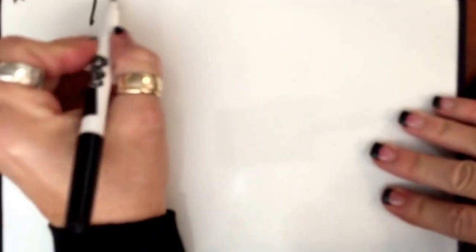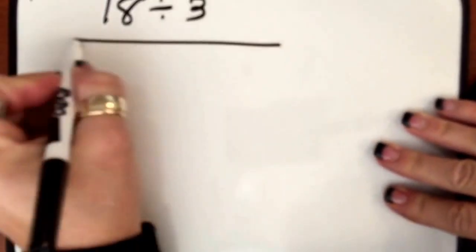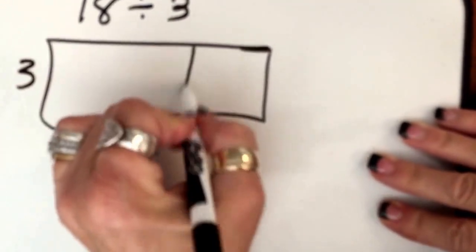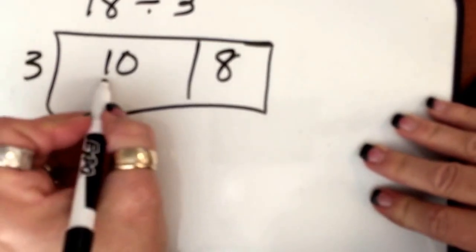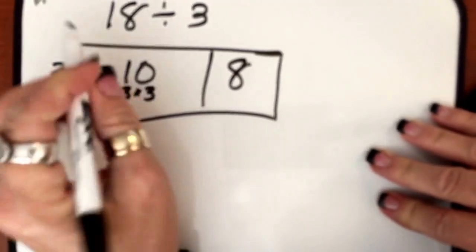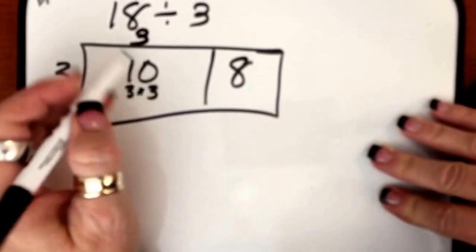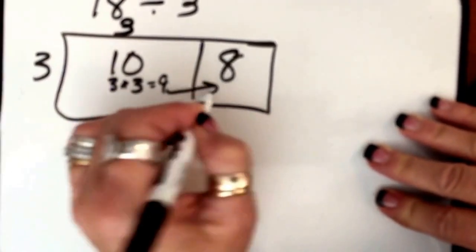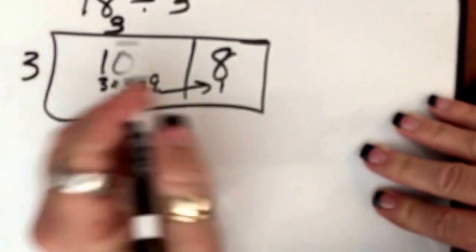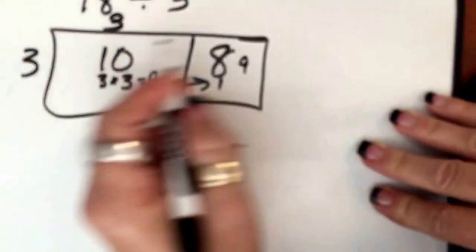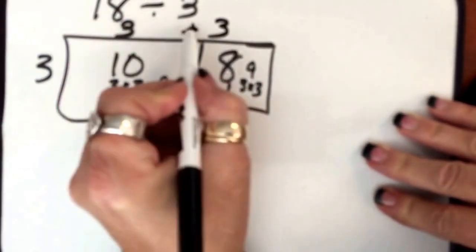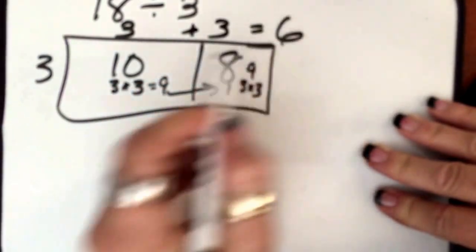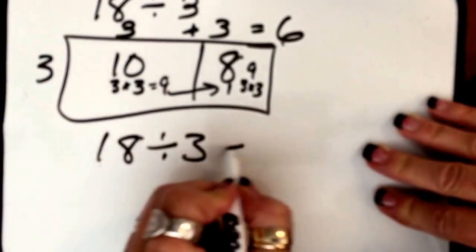Okay, we'll do one more. 18 divided by 3. So here's 3. 18 is 10 and 8. 3 times what gives you 10? Well, closest we can do is 3 times 3. So we'll put the 3 up there. And we've used 9. So we still have one more to get to our 10. So we're going to give it there. So 8 and 1 now is 9. And 3 times 3 gives us 9. So we're going to put the 3 up here. So 3 plus 3 equals 6. So 18 divided by 3 equals 6.